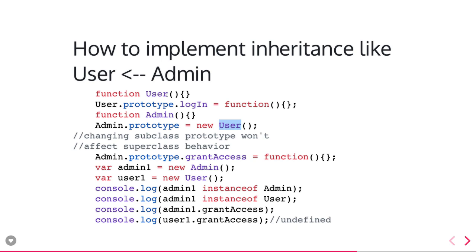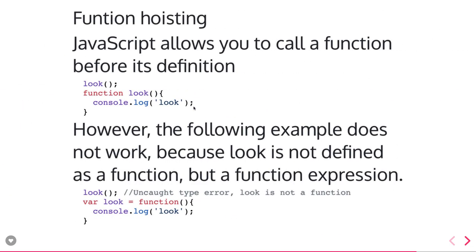Now admin gets all the access of user's properties. I added a grantAccess function on admin.prototype, and created two objects: admin1 from admin and user1 from user. Now admin1 instanceof admin is true, admin1 instanceof user is also true. But user1.grantAccess returns undefined because user doesn't have a grantAccess function. Admin has grantAccess and admin also has login.